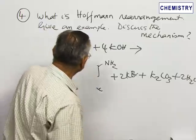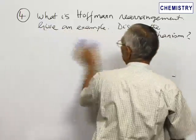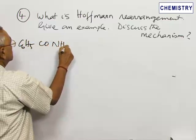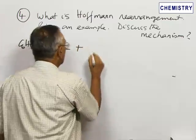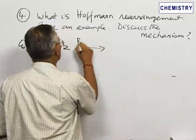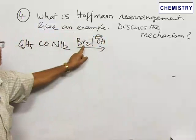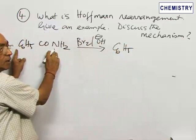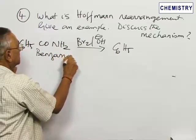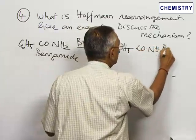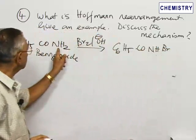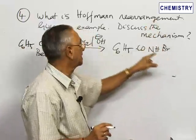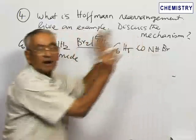The next part is to describe the mechanism of this reaction. We start with C₆H₅CONH₂ — benzamide — which reacts with bromine in the presence of alkali. The bromine in the presence of alkali replaces one hydrogen on the nitrogen. So we get bromobenzamide — that is, instead of NH₂, one hydrogen gets removed and replaced by bromine. This bromobenzamide is obtained as the first intermediate product.